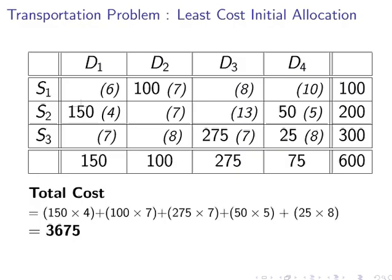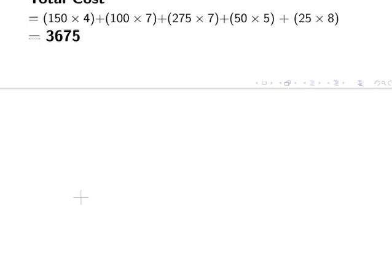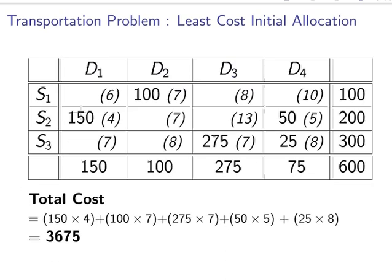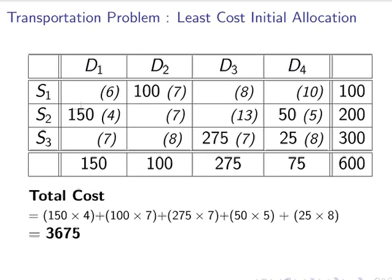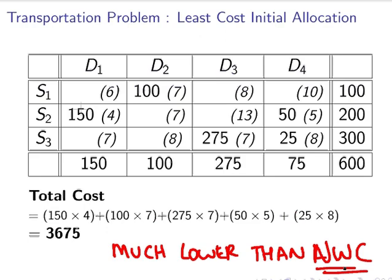Just as a remark, that is much lower than the northwest corner method. So, it's a much better algorithm than the northwest corner for the least cost initial allocation. But, is it the best? We will find out soon enough.